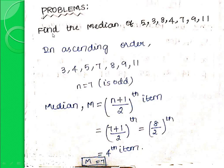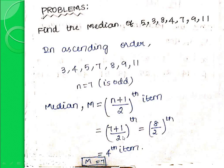Problems for ungrouped raw data. Find the median of 5, 3, 8, 4, 7, 9, 11. First arrange in ascending order: 3, 4, 5, 7, 8, 9, 11. Here n equals 7, which is odd. So median M equals (7+1)/2 th item equals 8/2 equals 4th item. The 4th number in the arranged series is 7. So the median value is 7.